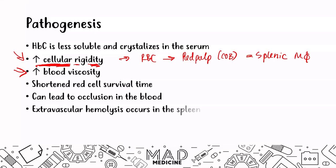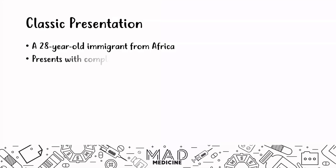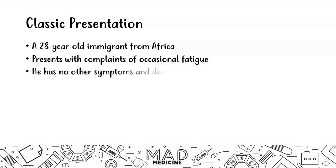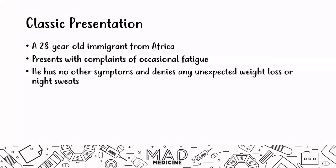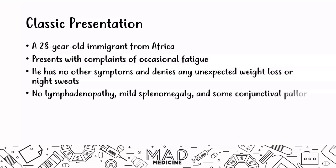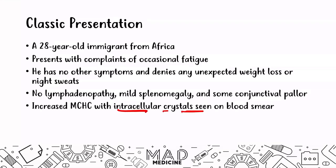Extravascular hemolysis mainly occurs in the spleen, and you're going to see splenomegaly as well. A classic board presentation for step one: a 28-year-old immigrant from Africa presenting with complaints of occasional fatigue, no unexpected weight loss or night sweats. On physical exam, you're not going to see lymphadenopathy, but you will see mild splenomegaly and conjunctival pallor. Most importantly, you are going to see an increase in MCHC with intracellular crystals seen on blood smear — very high yield. Hemoglobin C has the ability to crystallize in the serum, and that is the key giveaway.